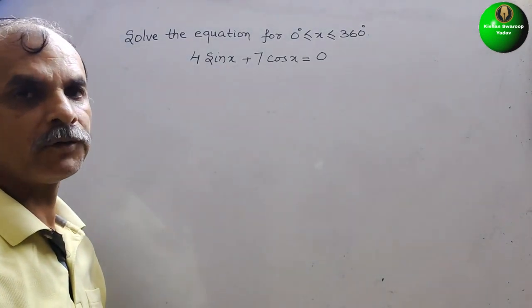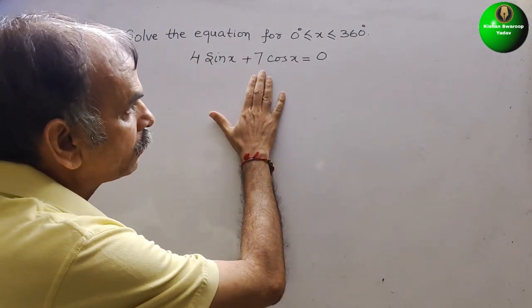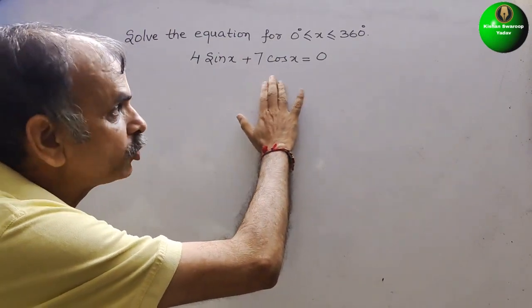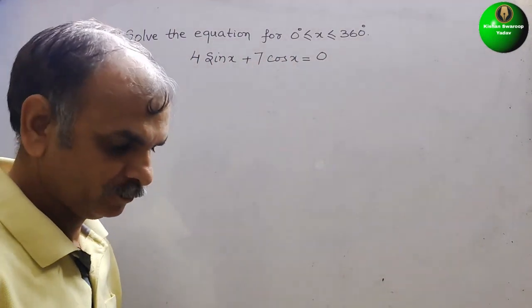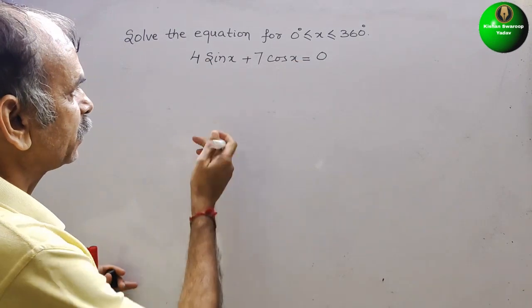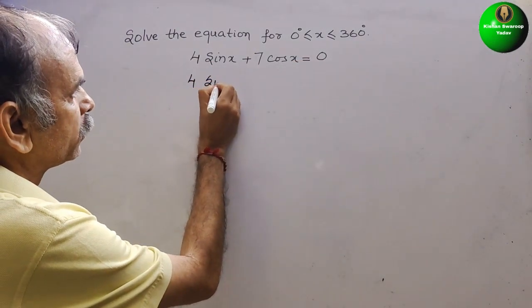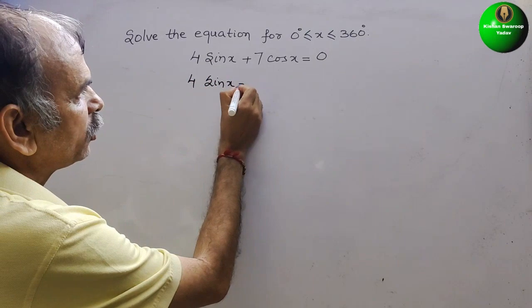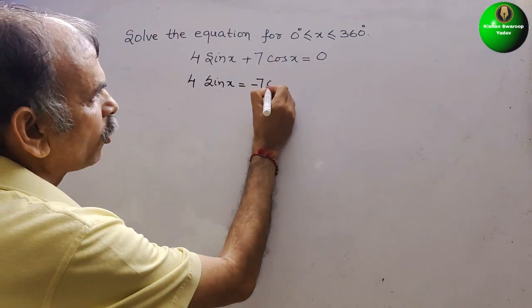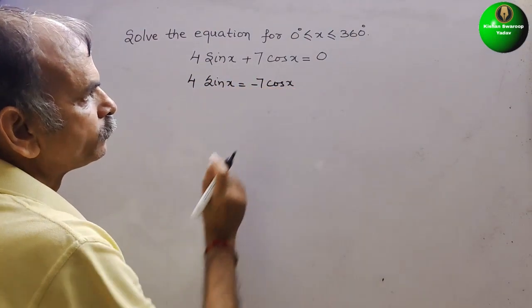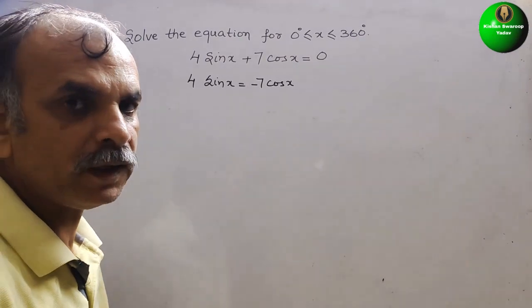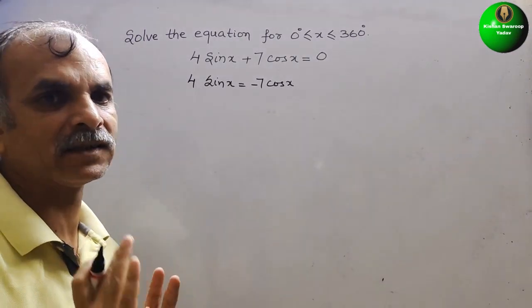So here what we have to do, we just have to bring one of the trigonometric ratios to another side. So we will get here 4 sin x equals minus 7 cos x.